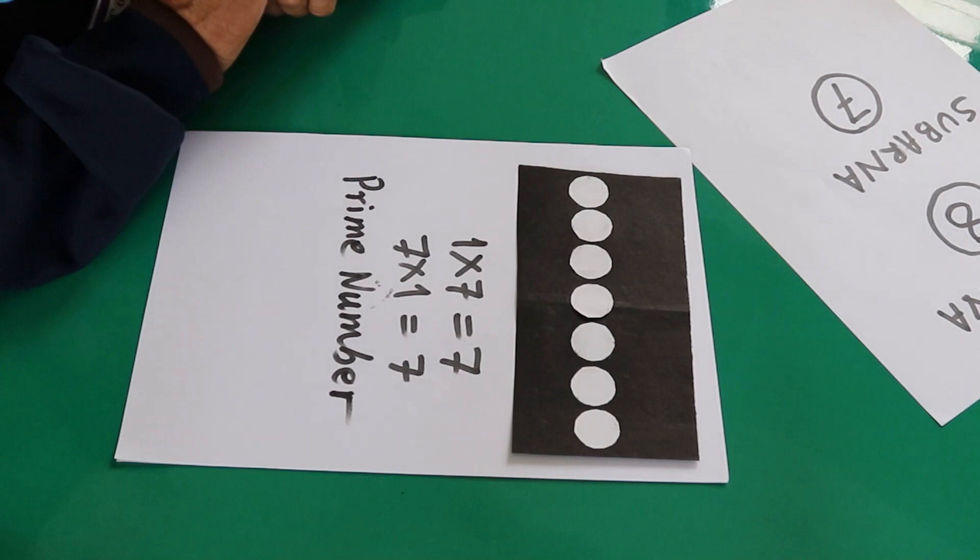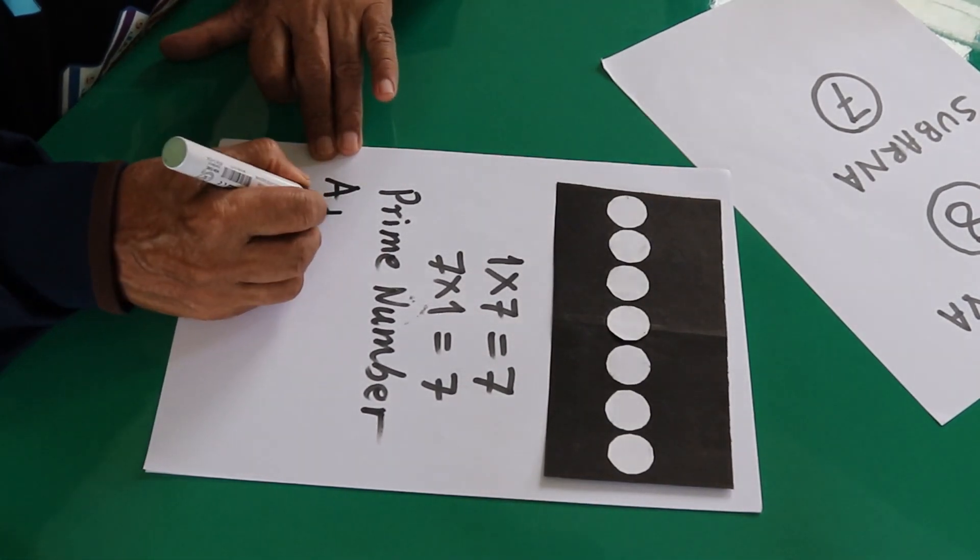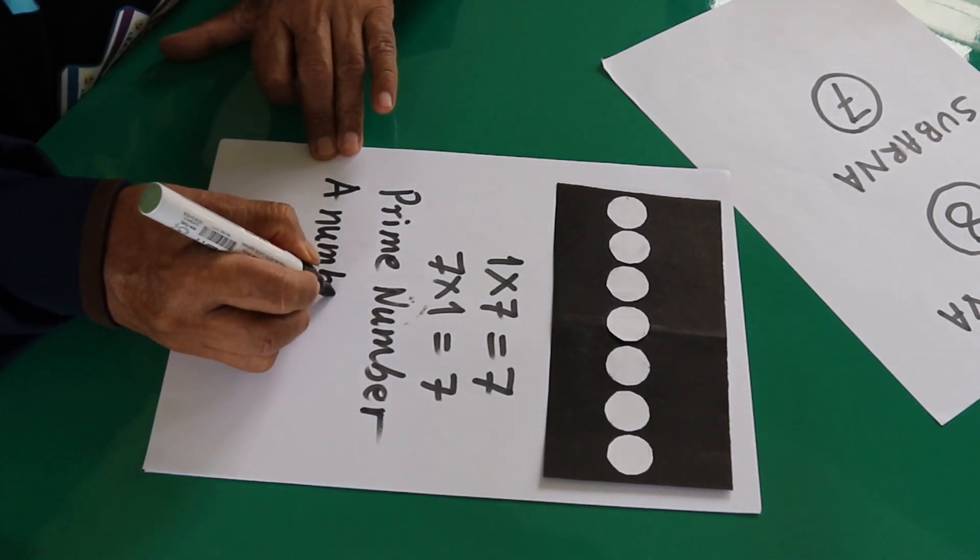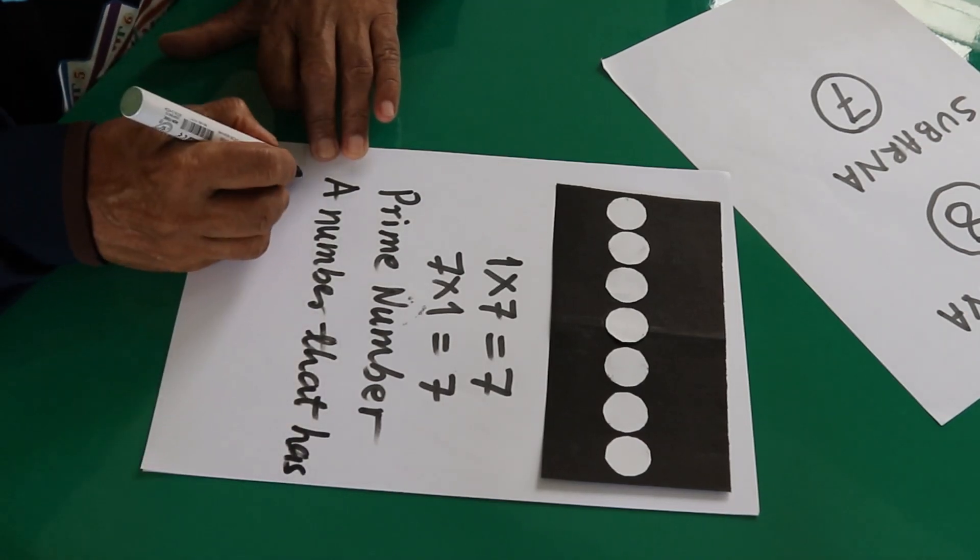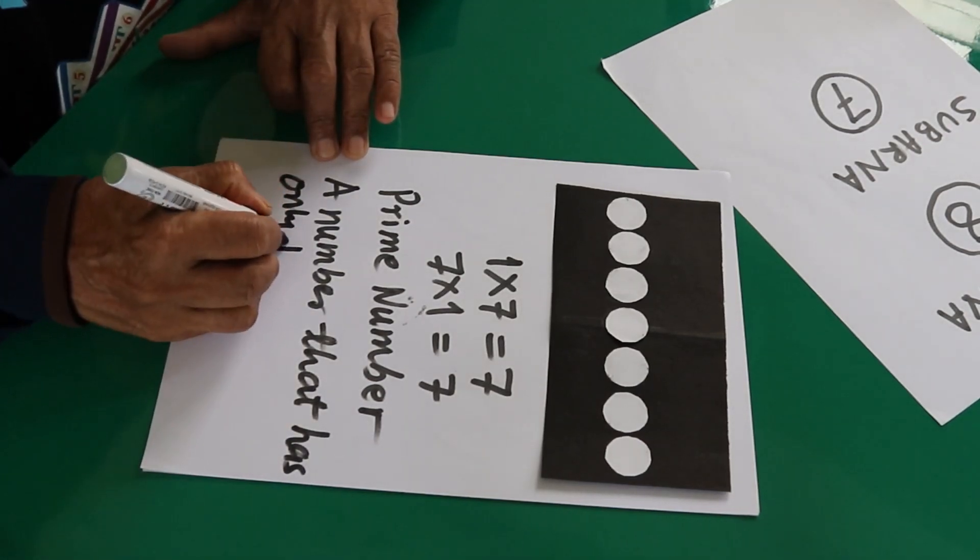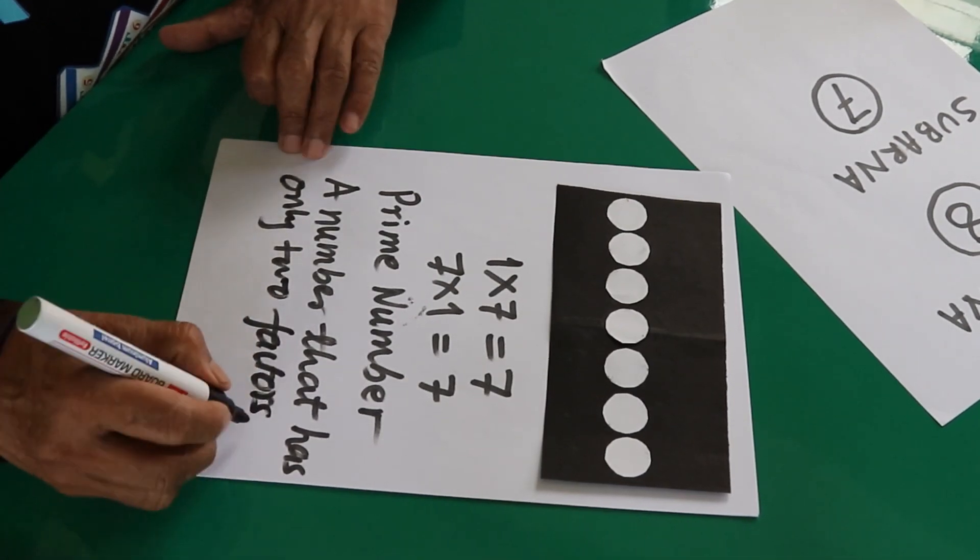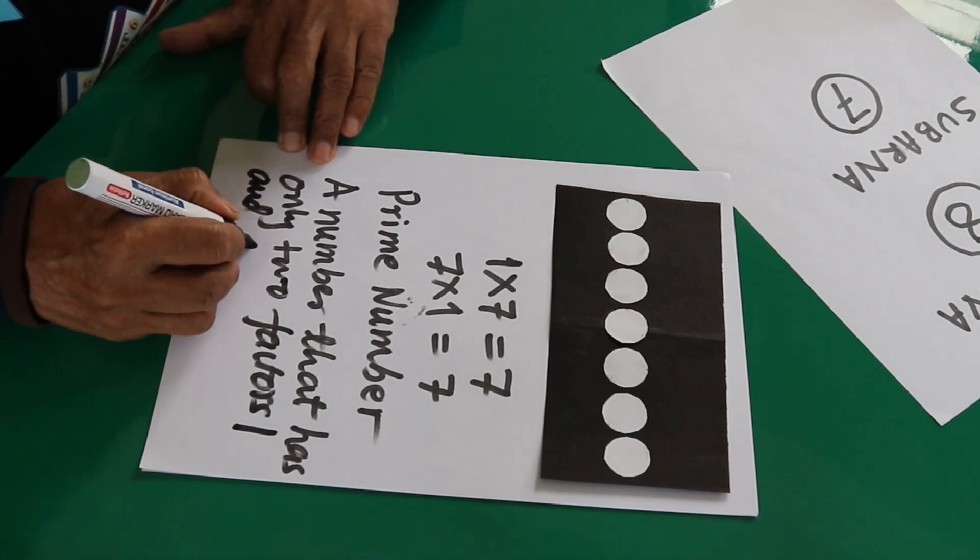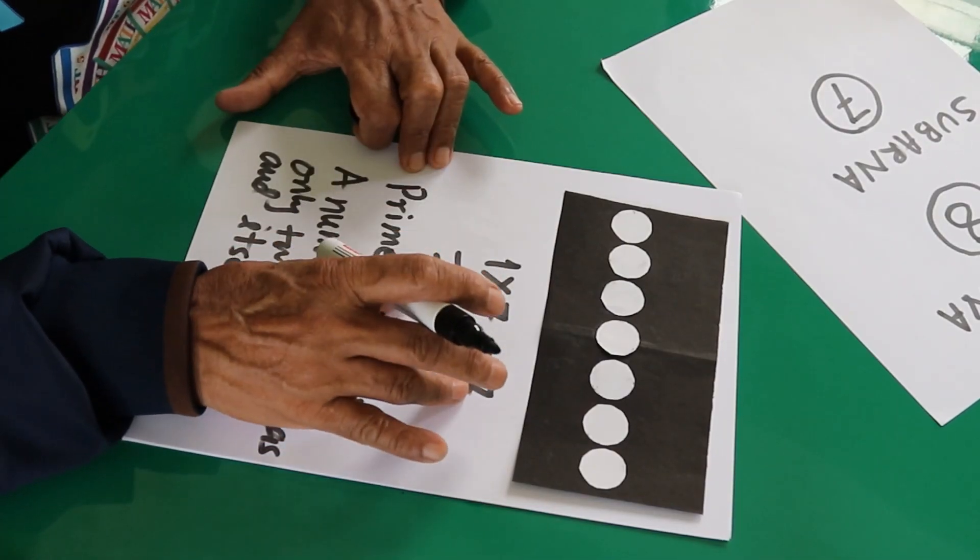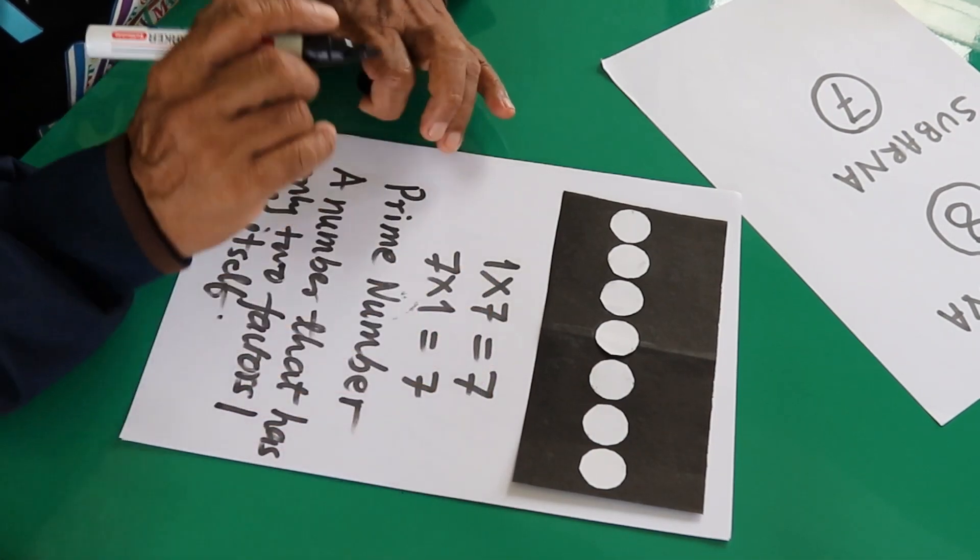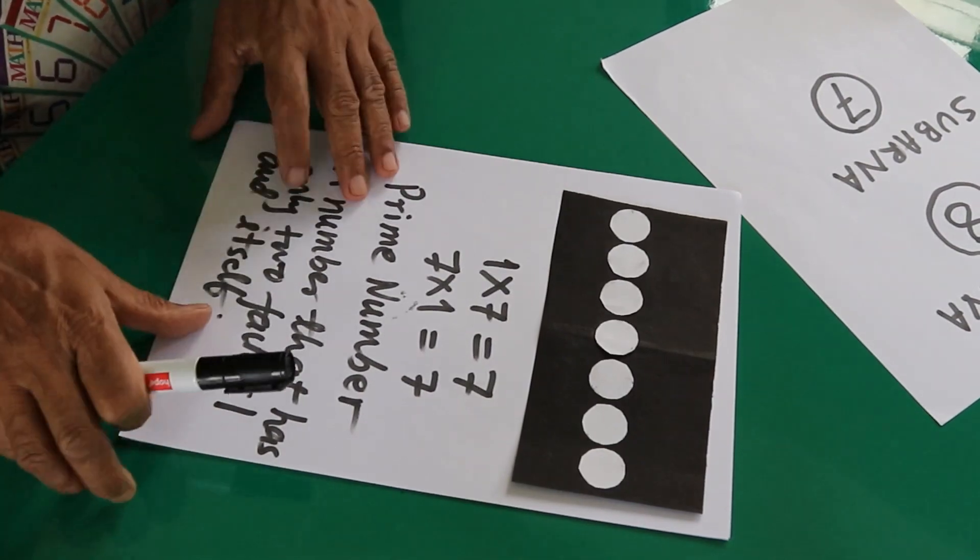Okay, so because of this character we define this number as the prime number. A prime number. It is a prime number. And to define prime number, a number that has only two factors, two factors, one and itself.